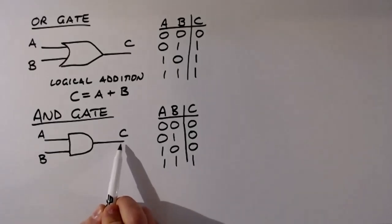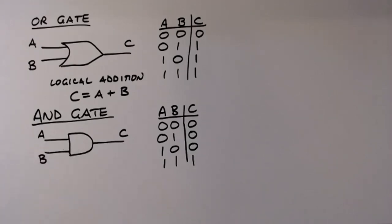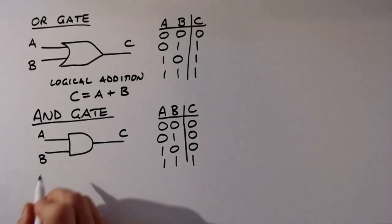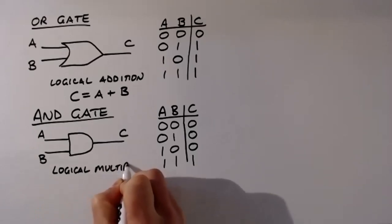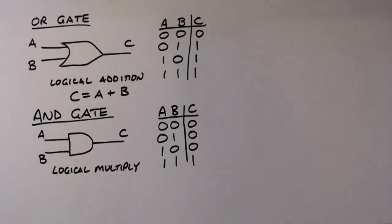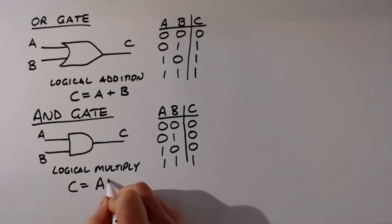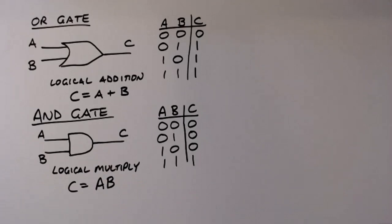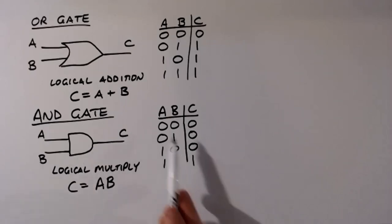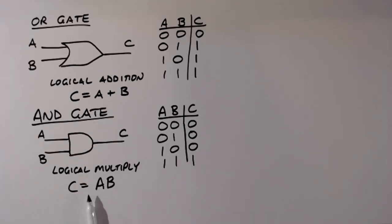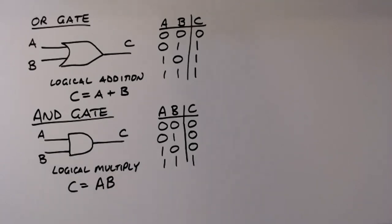The AND gate is a logical multiplication, written as C equals A times B, or just AB. Whenever you see a logical multiply between logical variables, you substitute that multiply operator with the AND truth table. All three representations — the truth table, the Boolean expression, and the schematic gate symbol — mean the same thing. They're all equivalent.